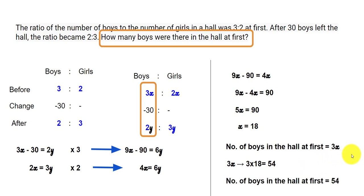The number of boys in the hall at first is 54. That's the algebraic way of solving this problem. I hope this was useful — share it with your friends, subscribe to the channel, and click the bell icon to receive regular updates. Thank you, have a great day.